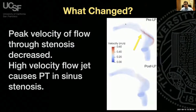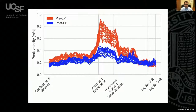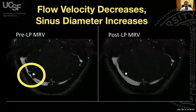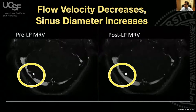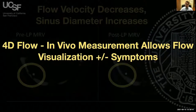This shows blood flow velocity along the centerline of the vein. Pre-lumbar puncture velocities are in red, post-lumbar puncture in blue. The velocity at the stenosis location slows down markedly post-LP. Anatomically, pre-lumbar puncture there is a stenosis that essentially immediately resolves when we lower the pressure. So 4D flow is a tool to analyze blood flow in vivo using MRI, both when patients are symptomatic and not, identifying what hemodynamic parameters change.